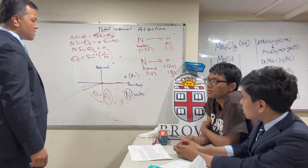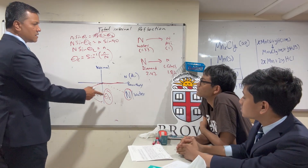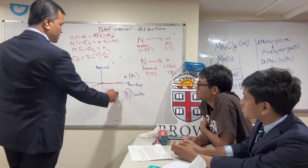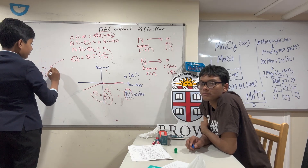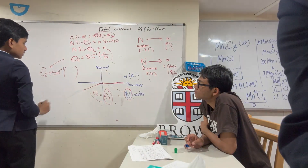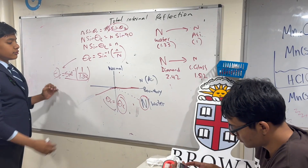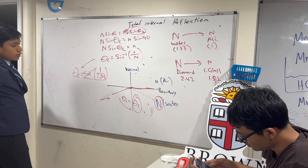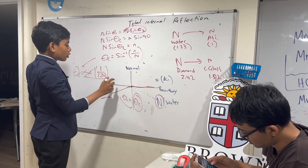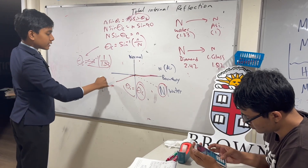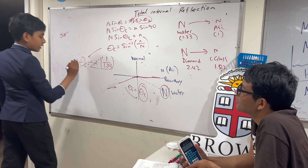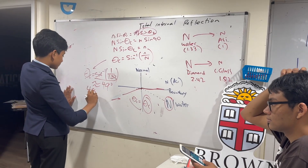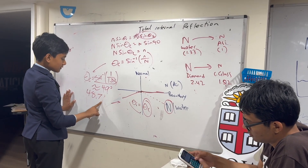Let's find the critical angle when light moves from water to air. That's sine inverse of one over 1.33, which is the index of refraction of water. While he's calculating, I'll explain why total internal reflection only occurs when going from a larger optical medium to a smaller one. The answer is 48.75 degrees, so about 49 degrees.